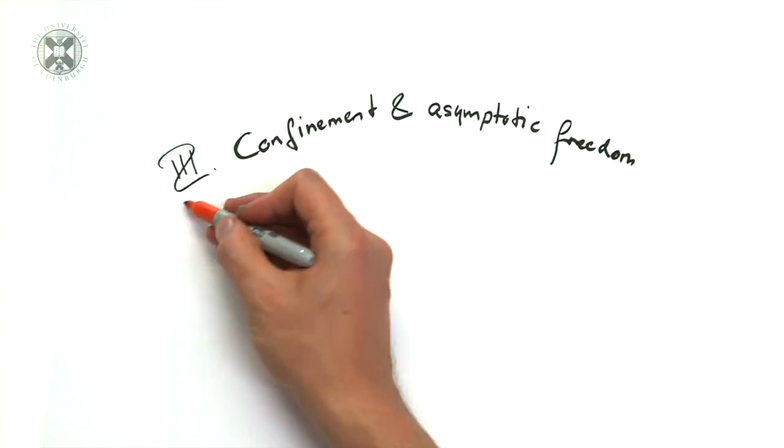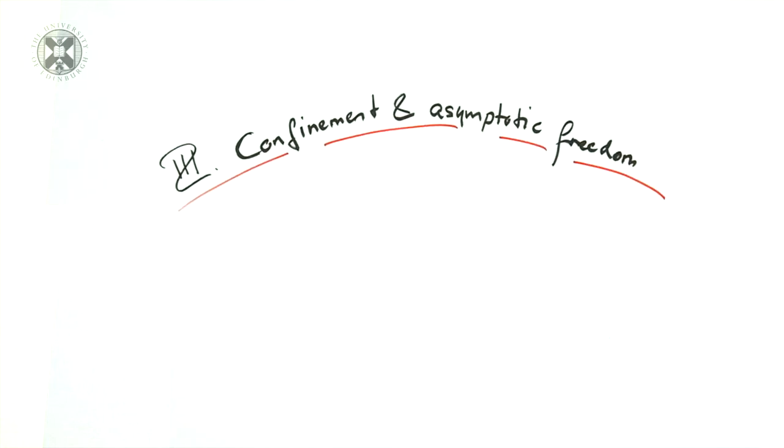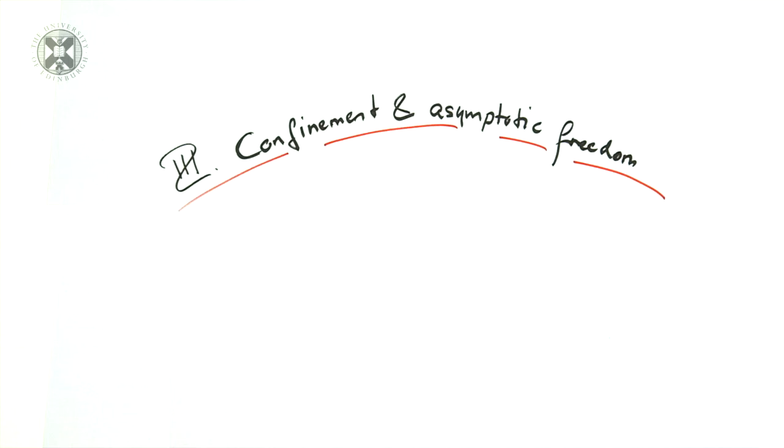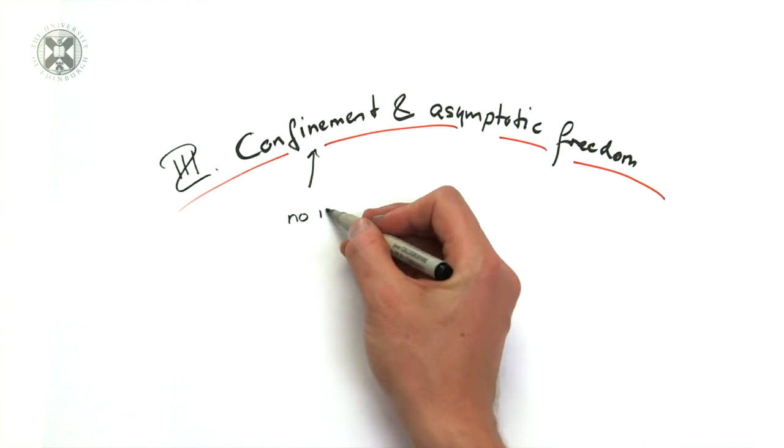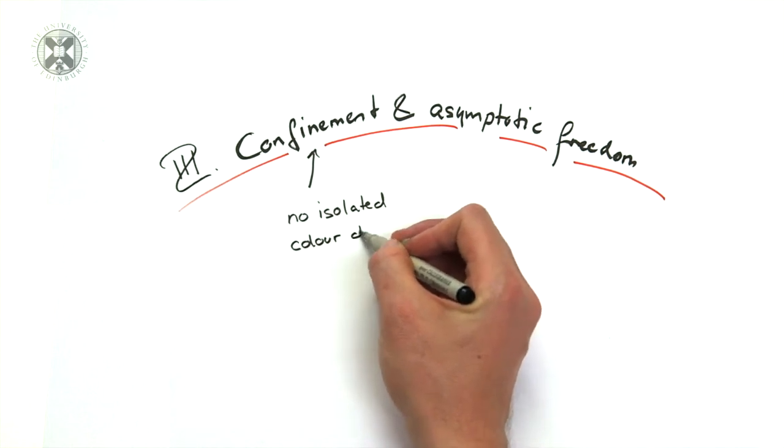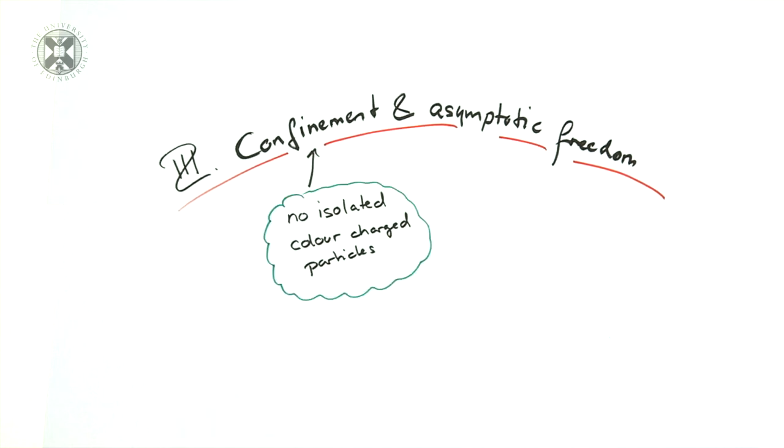Confinement and asymptotic freedom. Possibly the most puzzling aspect of QCD is that mathematically it is defined in terms of quarks and gluons, but neither have ever appeared in a particle detector in isolated form. That this can never happen is known as the confinement hypothesis.